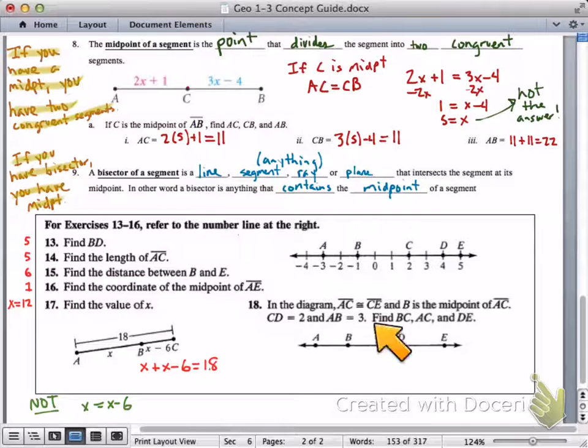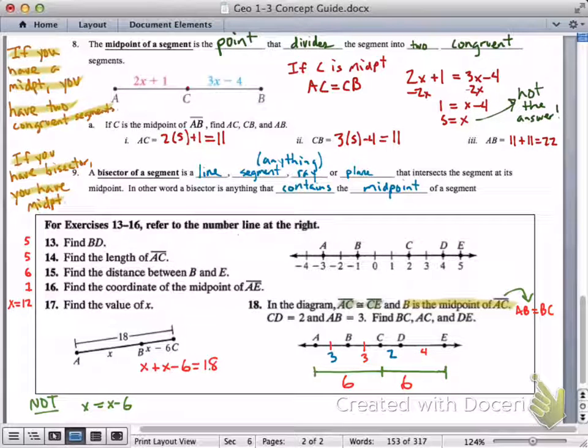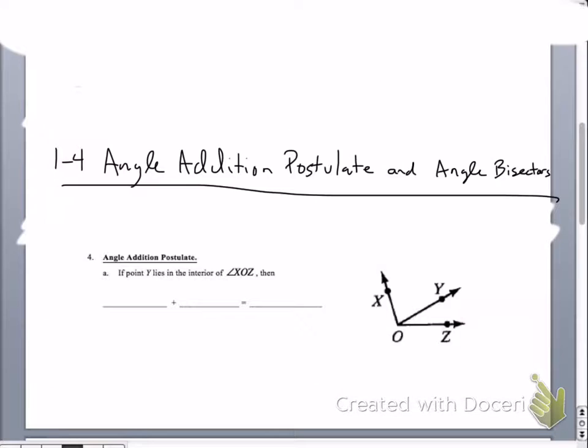On number 18, this diagram down here, you should be able to figure out the length of BC, AC, and DE from what is given right here. It's like a puzzle. The key thing here, it tells you that AC is congruent with CE and that B is a midpoint of AC. So, use that information and see if you can figure these guys out. How'd you do? Did you get that BC is equal to 3, that AC is equal to 6, and DE is equal to 4? I hope so.